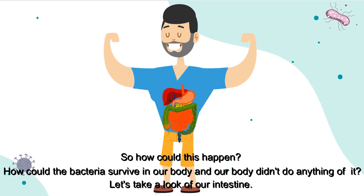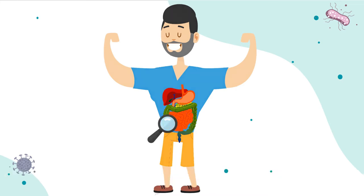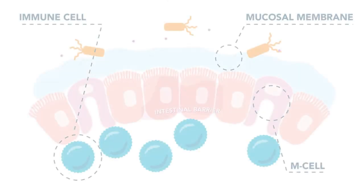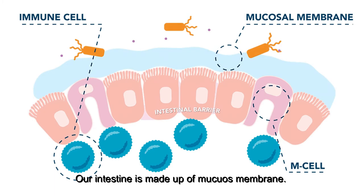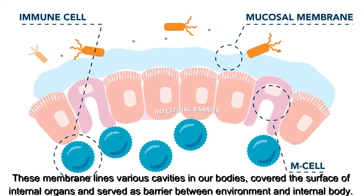Let's take a look at our intestine. Our intestine is made up of mucous membrane. This membrane lines various cavities in our body, covers the surface of internal organs, and serves as a barrier between the environment and the internal body.